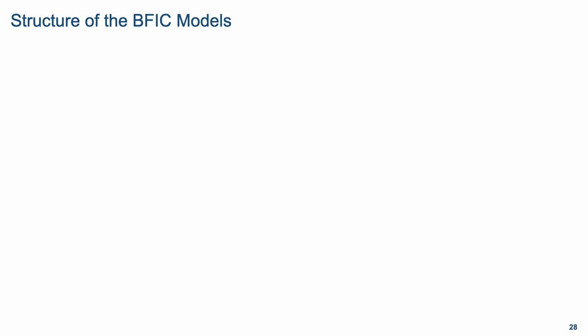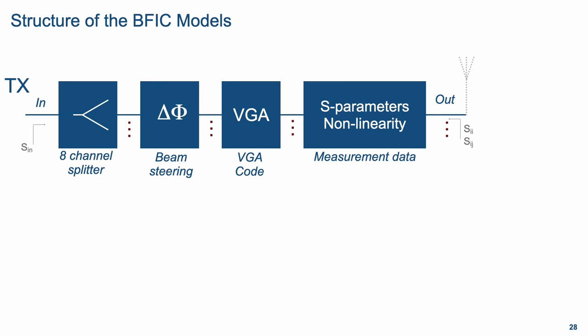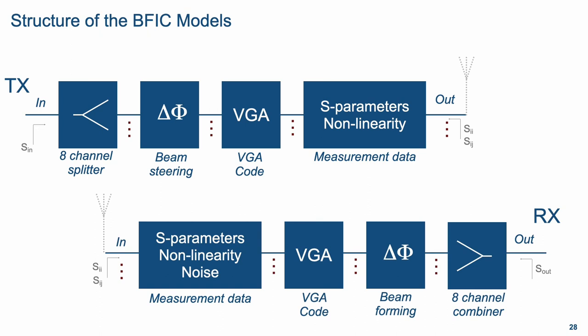When we developed these models, we adopted an architecture not necessarily representative of the chip's actual architecture, to ensure the model was correct but also as fast as possible to simulate. On the transmit path, we modeled the splitter input S11 of the OTBF 103, phase shifters for beam steering, a variable gain amplifier for VGA code control, and a macro block representing TX characteristics in terms of S-parameters and nonlinearity, taking into account frequency dependency on gain and output impedance. The structure is mirrored on the receiver side.